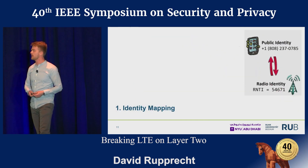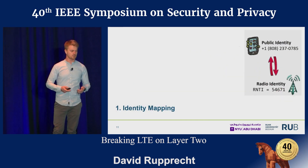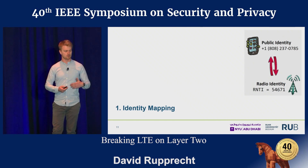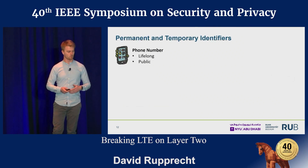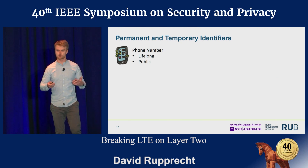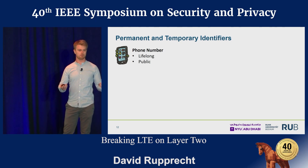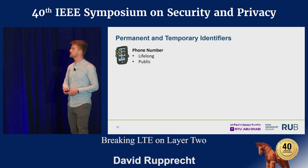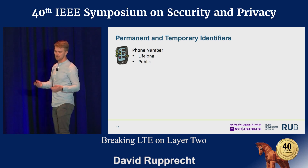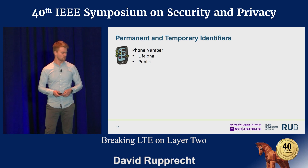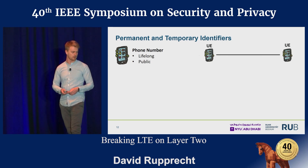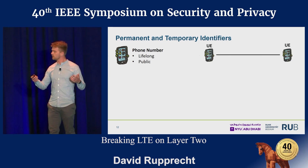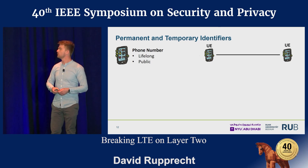Starting with identity mapping — this allows us to use a public identity to map down to the radio identity. In LTE we have different identities. First, we have the public identity of the victim, for example the phone number of your friend. It's basically lifelong — you might change it, but you'll give your friends your new number. This operates on layer eight, allowing UE-to-UE identification.